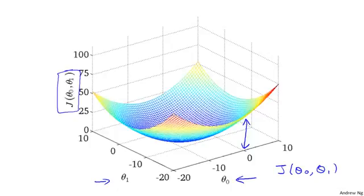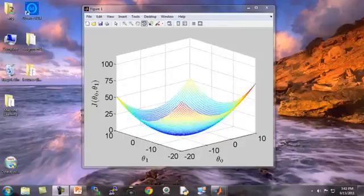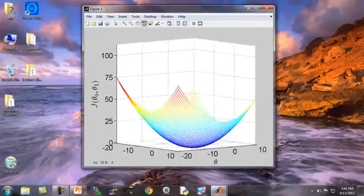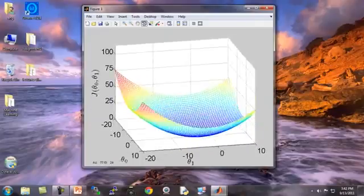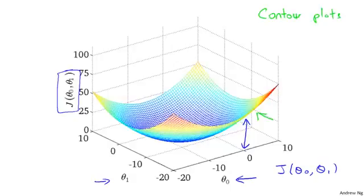Let me show you the same plot in 3D. Here's the same figure in 3D with axes theta zero, theta one, and vertical axis j of theta zero, theta one. If I rotate this plot around, you get a sense of this sort of bow-shaped surface — that's what the cost function j looks like. For the purpose of illustration in the rest of this video, I'm not actually going to use these 3D surfaces. Instead, I'm going to use contour plots, also called contour figures, to show you these surfaces.